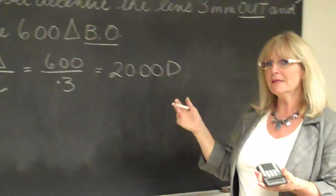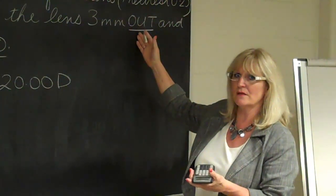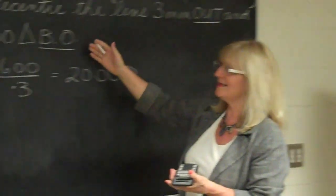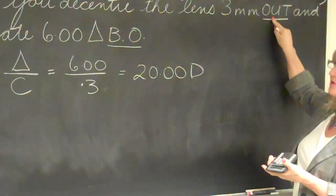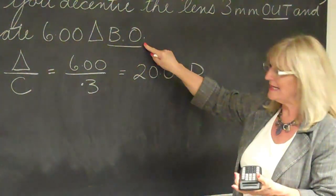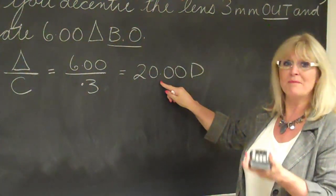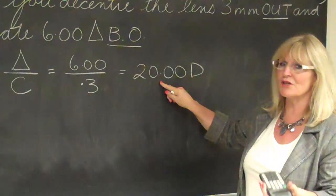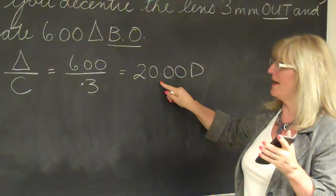So when you read the question, it's critical and important to look at the direction of the decentration. Also, look at the direction of the prism. You can see right away, out is the decentration, out is the prism. Then this has to be a plus lens when we get to the final answer, because decentration and base direction are exactly the same on a plus lens. So please remember that.